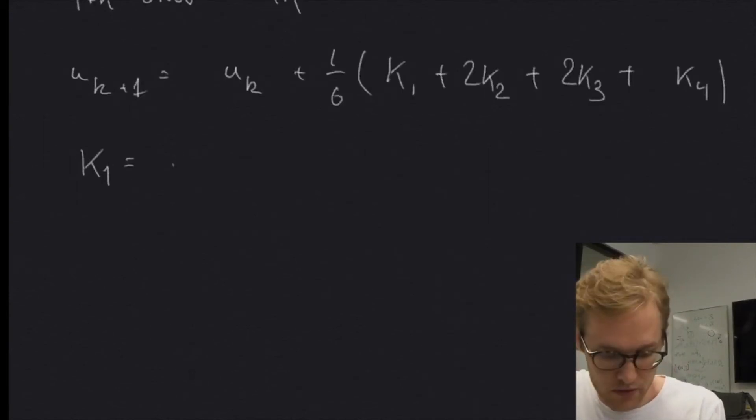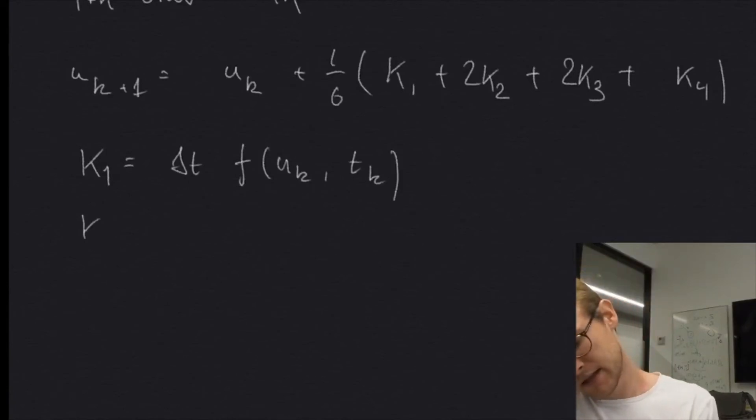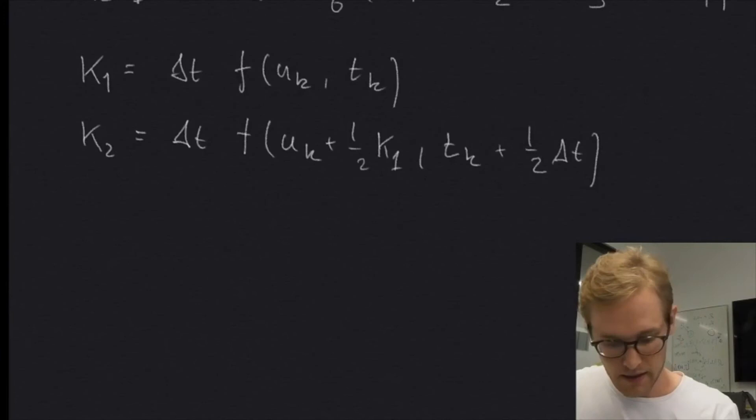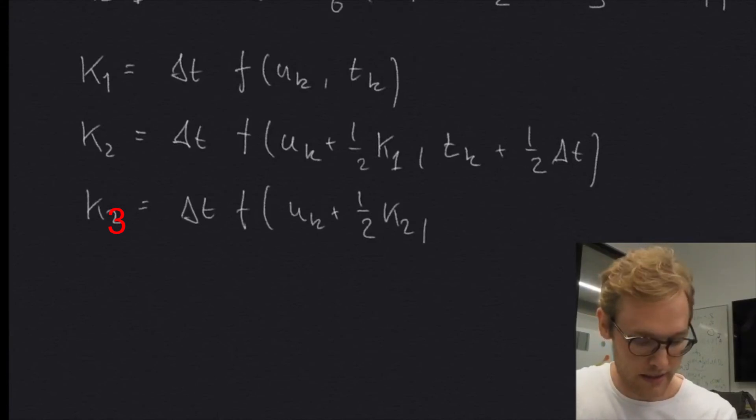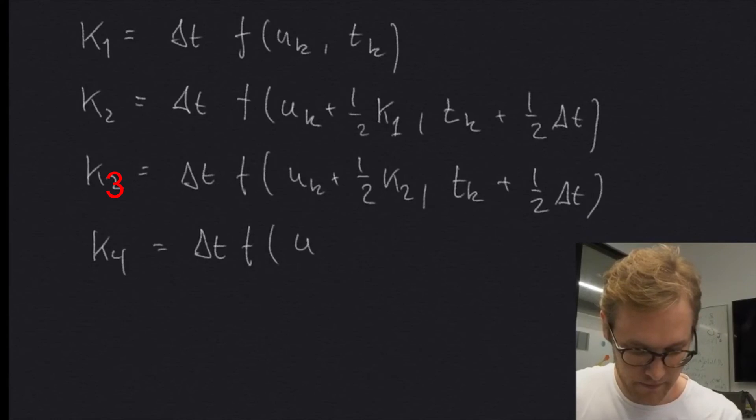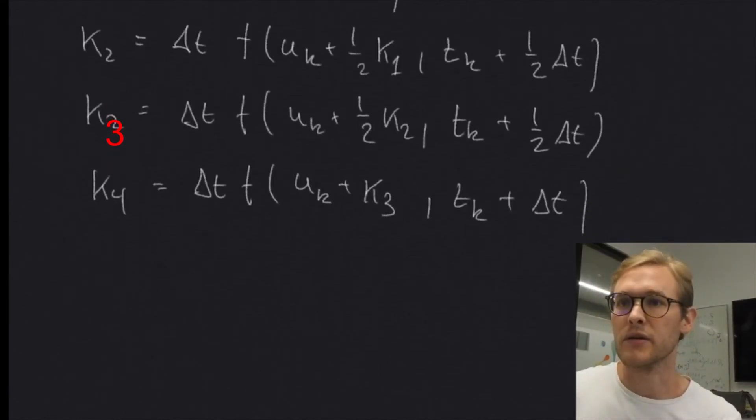Where K1 is equal to delta T times our F, evaluated at UK and TK. And K2 is also delta T times our F value, but this time evaluated at UK plus one half of K1 and TK plus one half of the time step. And K3 is a bit similar. We do the same thing, delta T at F UK plus a half, but this time a half of K2 and the same thing for the TK plus one half delta T, I think that's correct. Yep, and the K4 is equal to delta T F UK plus K3, not a half this time, TK plus a full time step. So those are all the K's.